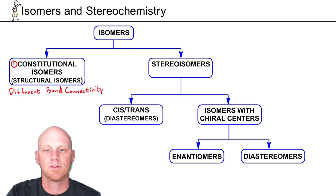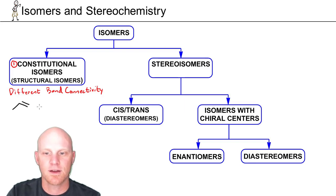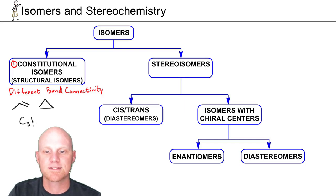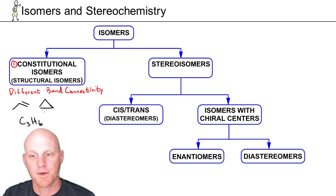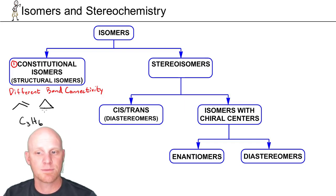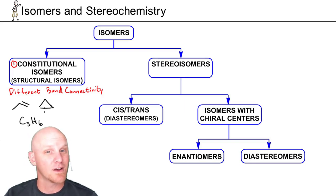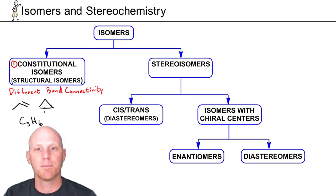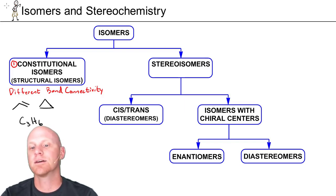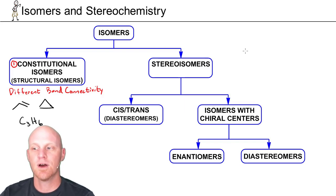For example, if I look at an alkene here and compare that to cyclopropane, I find that these both have the formula C3H6. But the atoms are connected in a totally different pattern. Do I have a straight chain of three carbons and a pi bond, or do I have a ring of three carbons and no pi bond? The bond connectivity is completely different between the two — those are constitutional or structural isomers.